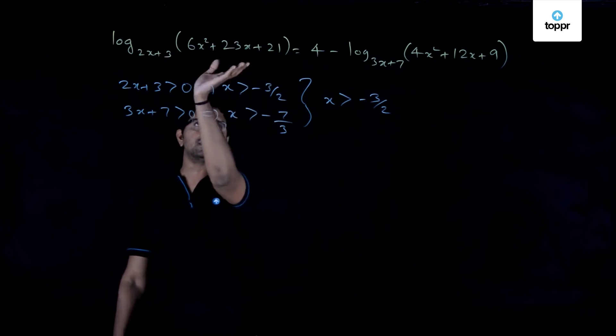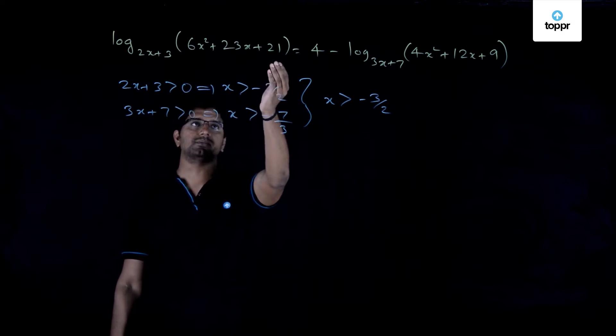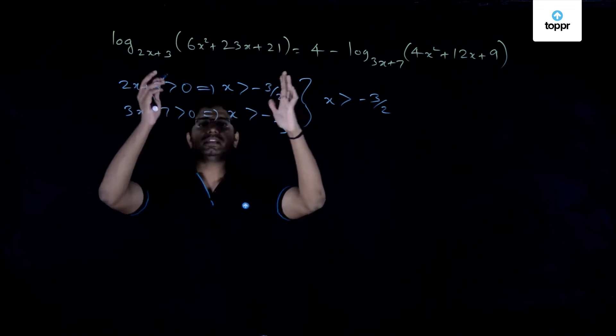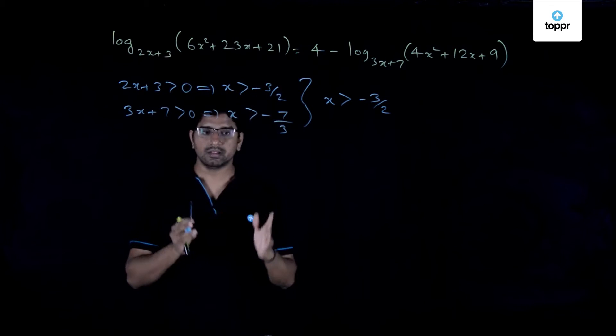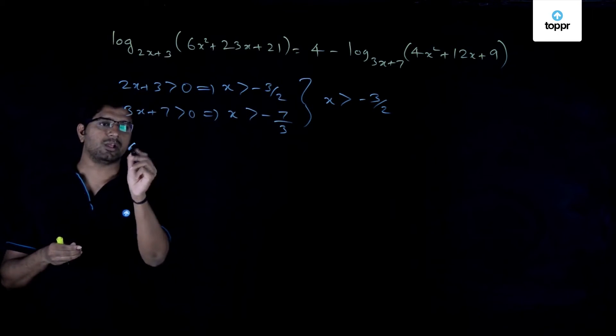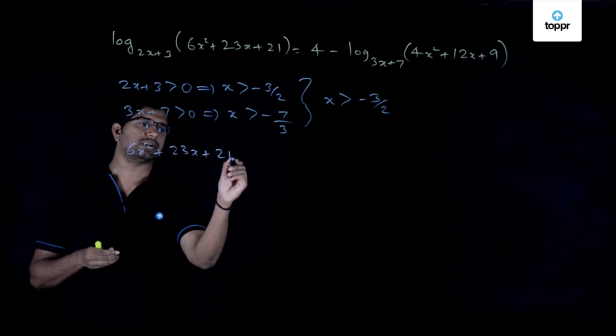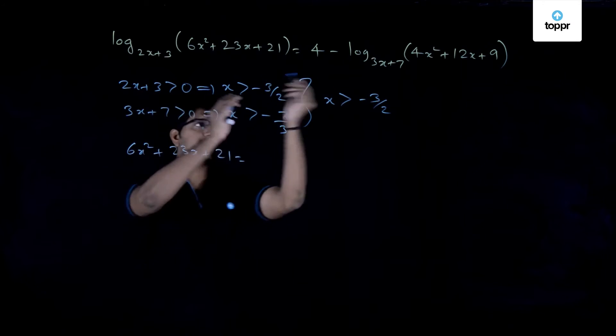The important thing here is that we are given a quadratic expression, that is 6x² + 23x + 21. The first thing to be done is to factorize this. And if you factorize it, you will get that this expression is equal to (2x+3) times (3x+7).